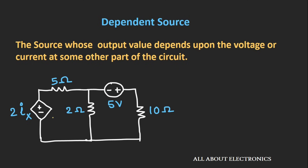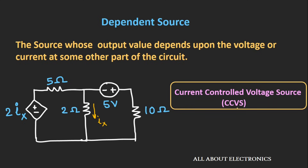Here we have one circuit which contains one dependent voltage source. The value of this voltage source is given by the expression 2×ix, where ix is the current flowing through the 2 ohm resistor. As this current changes, the value of the voltage source changes. The current ix is controlling the voltage, so this is an example of a current-controlled voltage source, where current is controlling the output voltage.